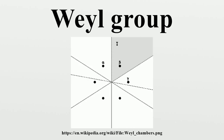Bruhat decomposition: if B is a Borel subgroup of G, i.e., a maximal connected solvable subgroup, and a maximal torus T = T_0 is chosen to lie in B, then we obtain the Bruhat decomposition which gives rise to the decomposition of the flag variety G/B into Schubert cells. The structure of the Hasse diagram of the group is related geometrically to the cohomology of the manifold, which is constrained by Poincaré duality.